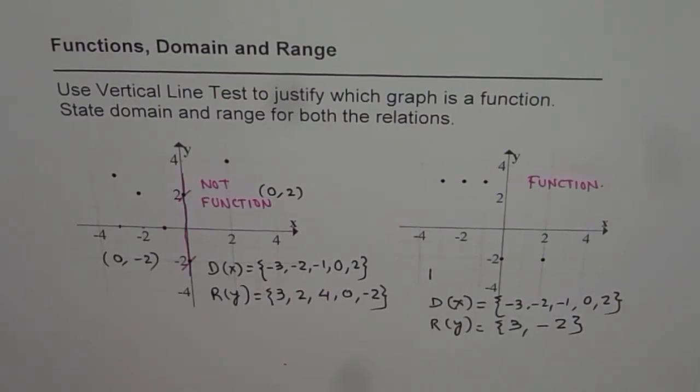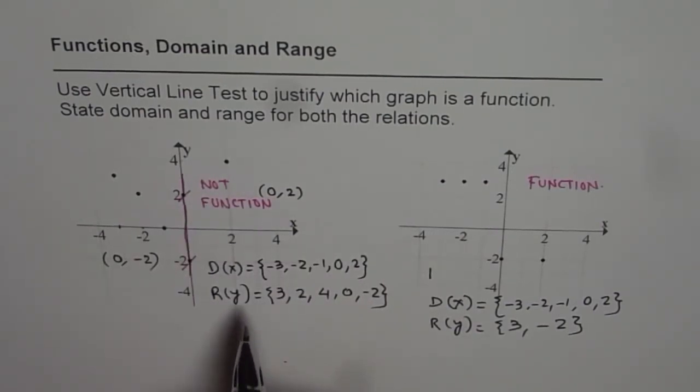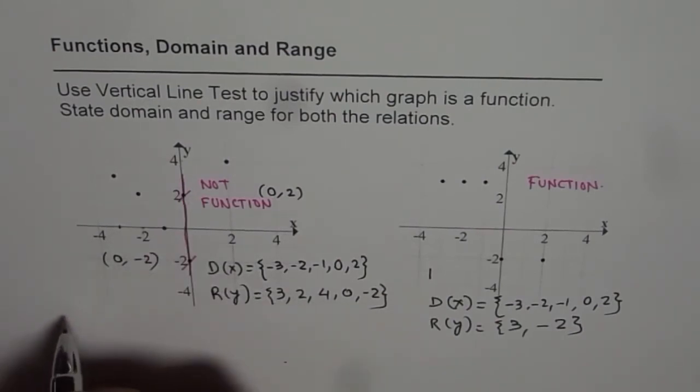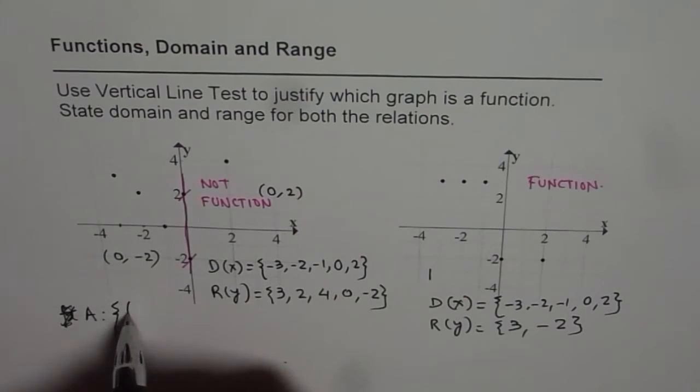Well, it is not asked here, but we could actually write each relation as a set of ordered pairs. So let me write down these relations as a set of ordered pairs. And from there, you can check your domain and range. So for the first one, let's say A. So A could be written as coordinate points.